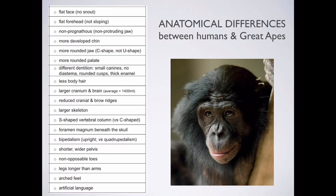When you look at our foreheads, our foreheads are absolutely vertical — they do not slope backwards. We have what's called a flat forehead, whereas the other apes have a sloping forehead to some degree. As mentioned previously, we are non-prognathous and do not have a protruding jaw, whereas all the other great apes are prognathous. Because we don't have a protruding jaw, we have developed a chin, and the other apes' chins are not as developed as ours.